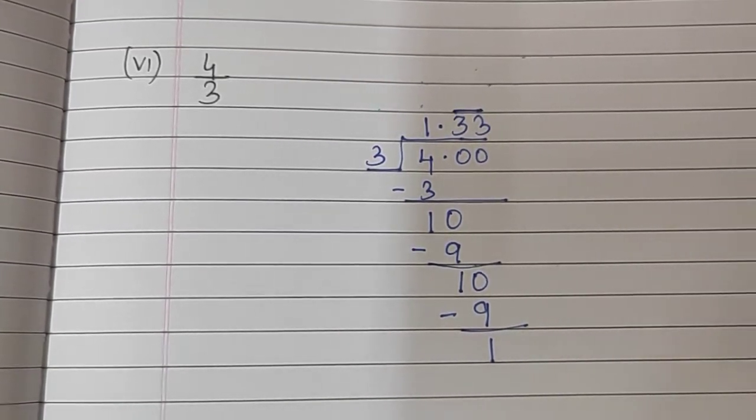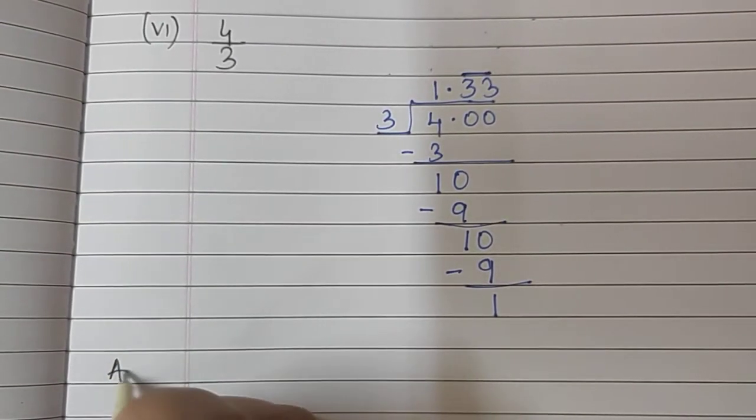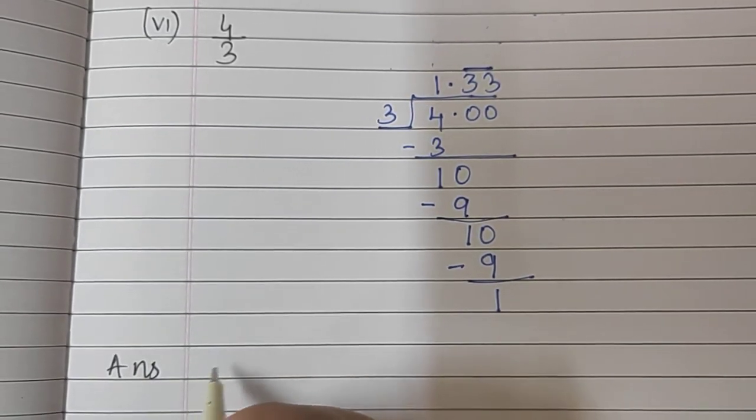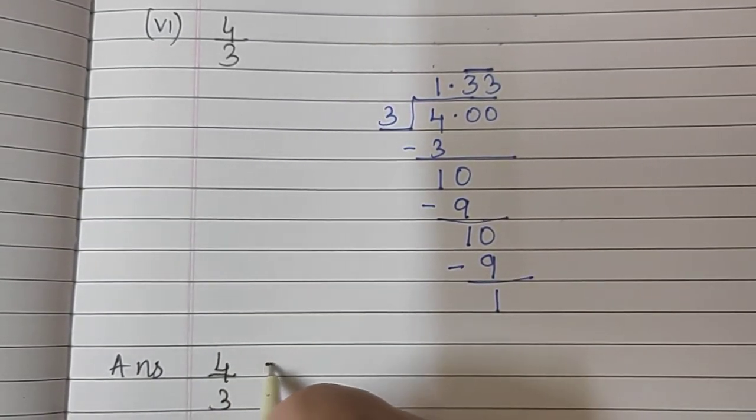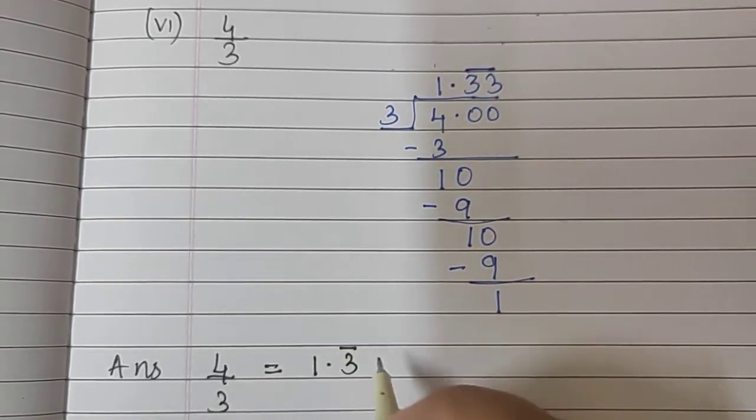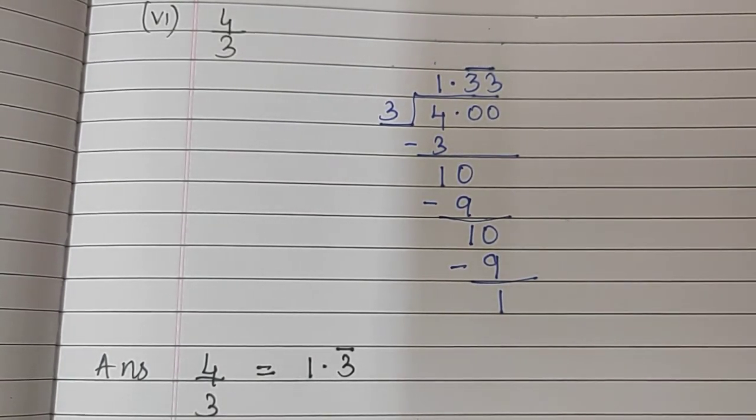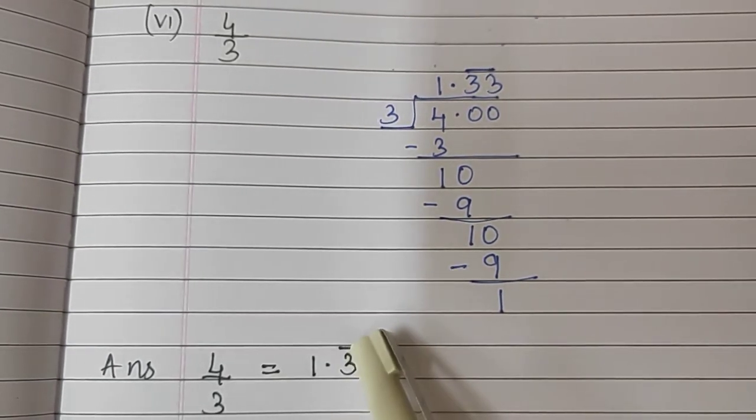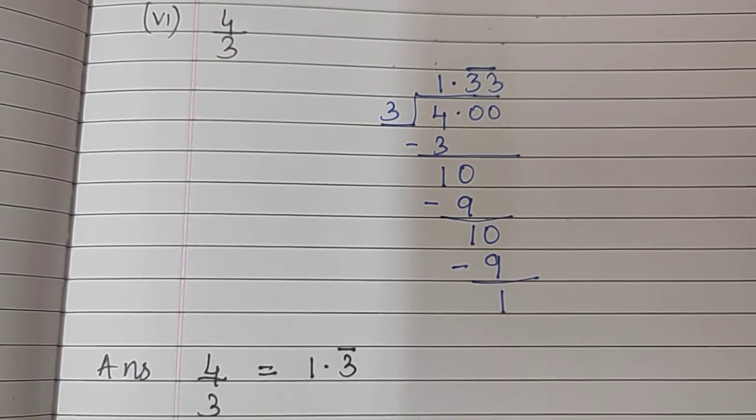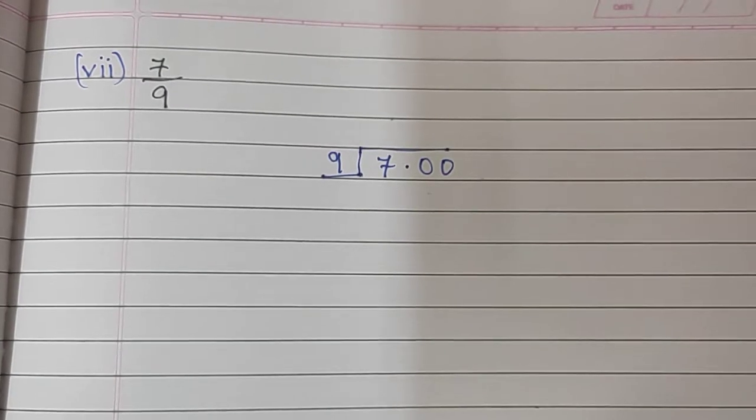Therefore, our answer will be 4 upon 3 is equal to 1.3 where 3 is recurring. You can write 1.33 and put a line on top. That's also okay. You can write 1.3333 times also. It's okay. Or you can write it just once and put a line on top. That means 3 is recurring. The last sum of this exercise.